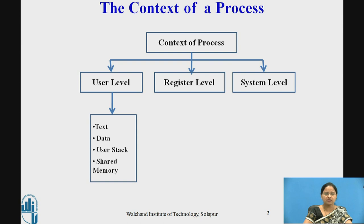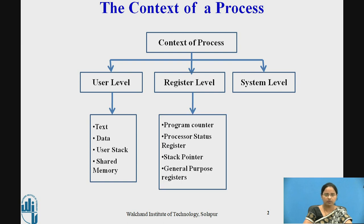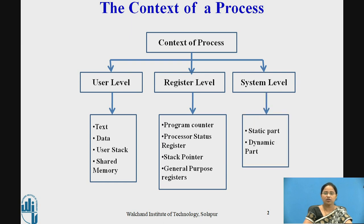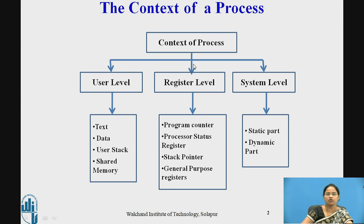User level context contains text, data, user stack, and shared memory which is related with the process. Register level context consists of program counter, processor status registers, stack pointer, and general purpose registers. System level context contains the static part and dynamic part of the process. User level, register level, and system level context combinedly form the whole context of the process.